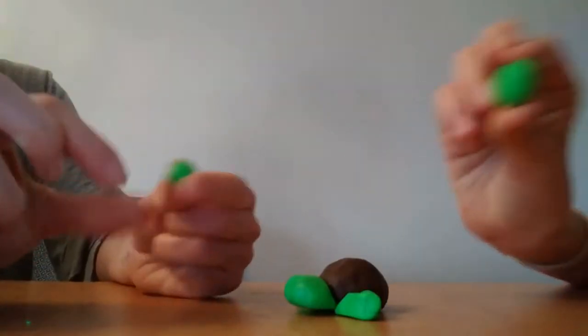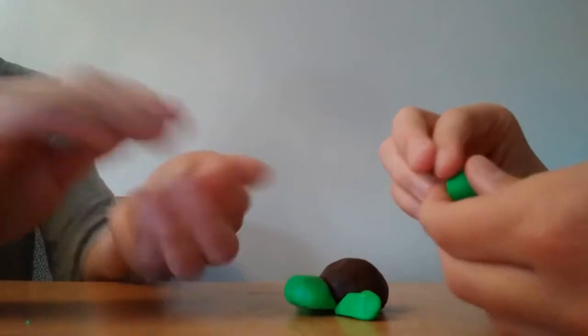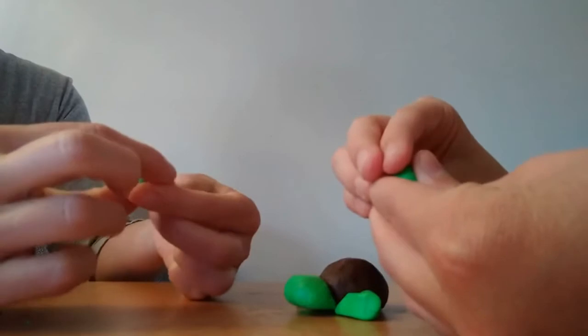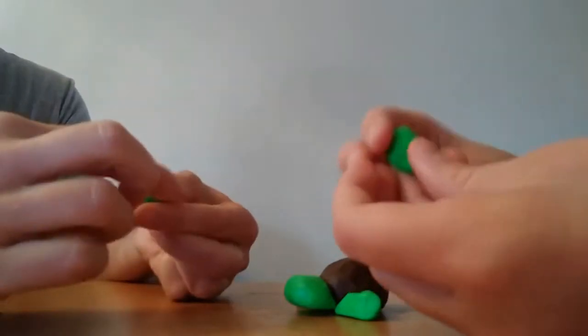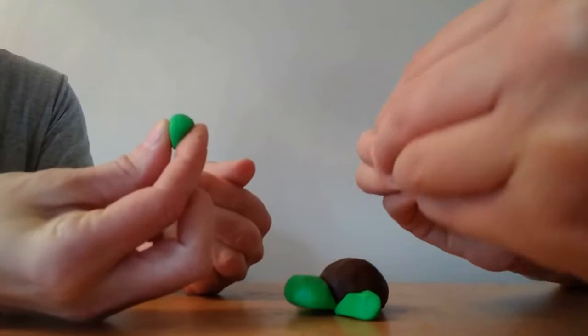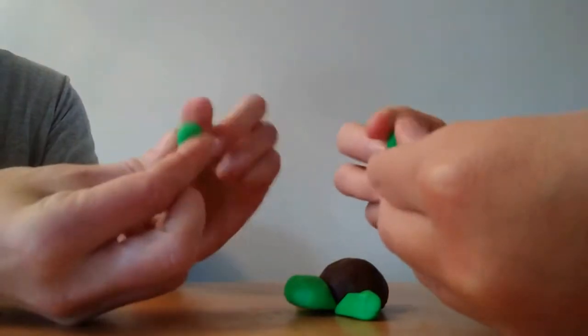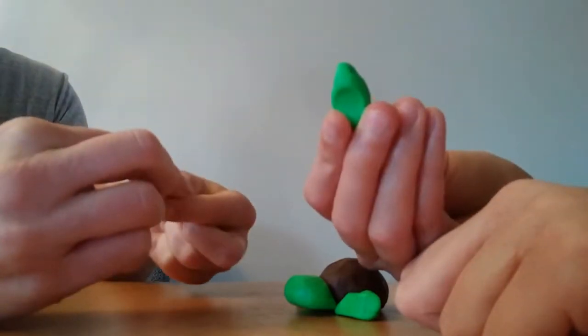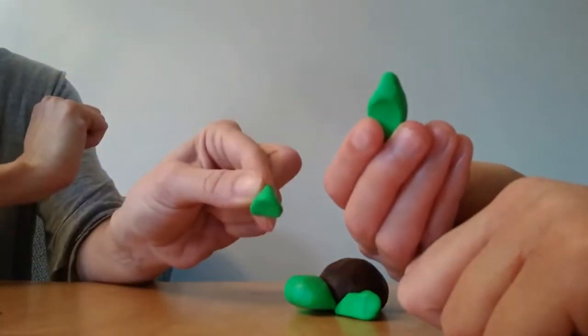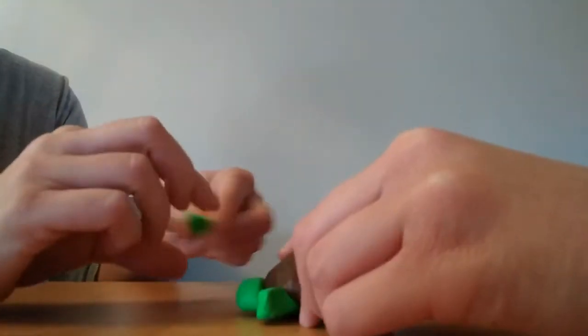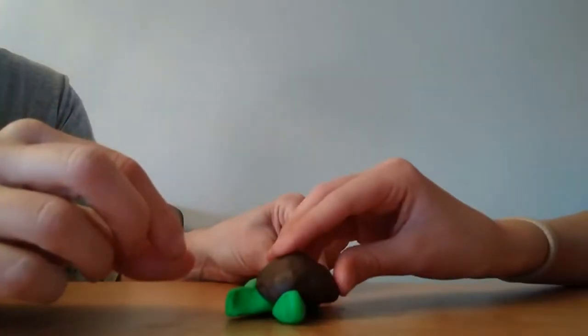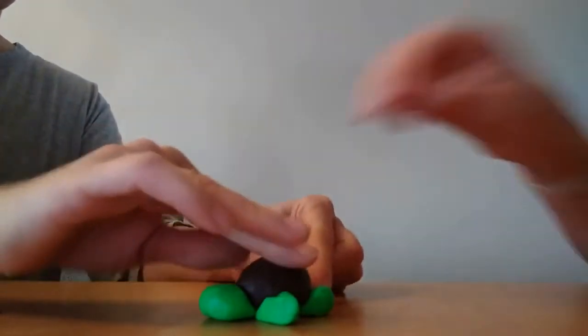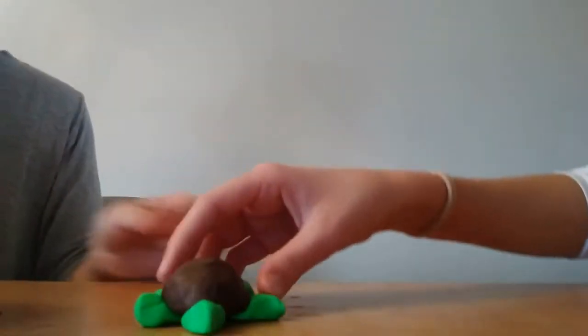Now we're going to make the back legs. You start with a little piece of clay. Make it into a little ball. And then you're going to make a triangular shape. Kind of pinch the top pieces like that. And again, you're going to flatten the back. And then you're going to place the back legs on the back of the shell.